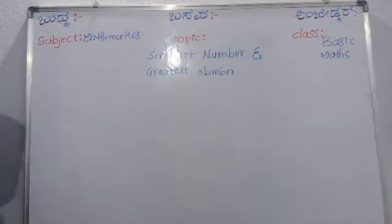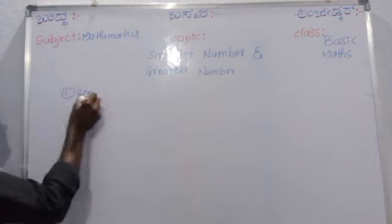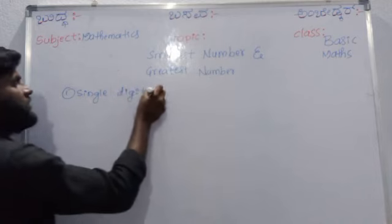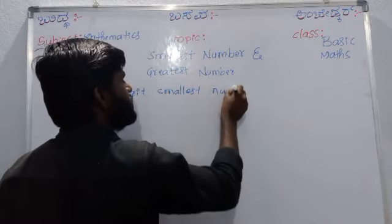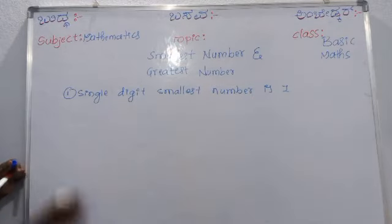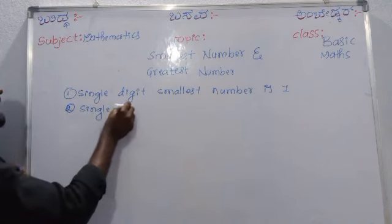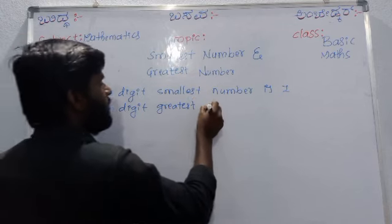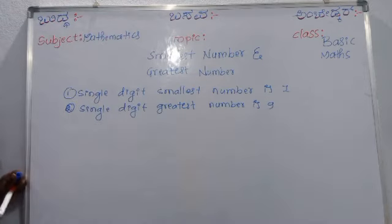First, single digit smallest number is one. Then, single digit greatest number is nine. As we know that, these are very important concepts of digit mathematics.